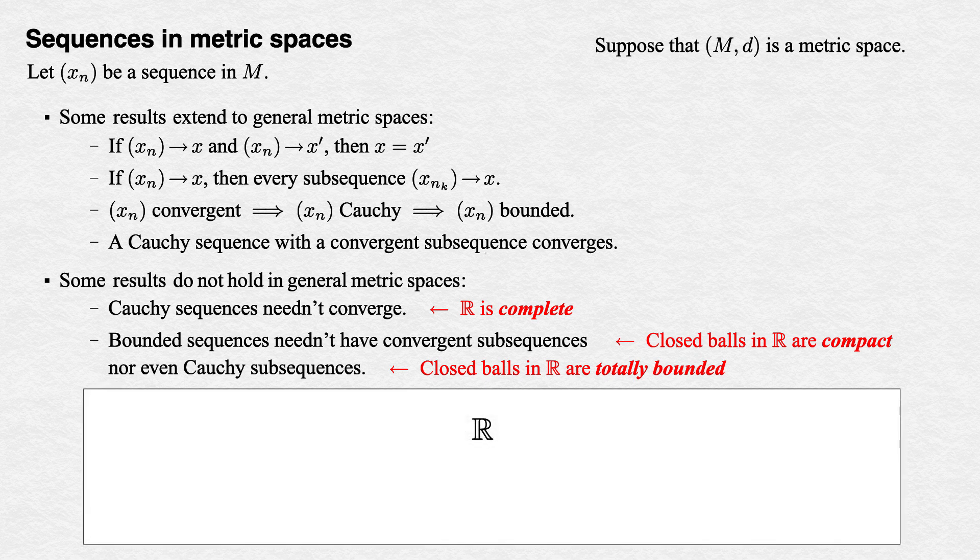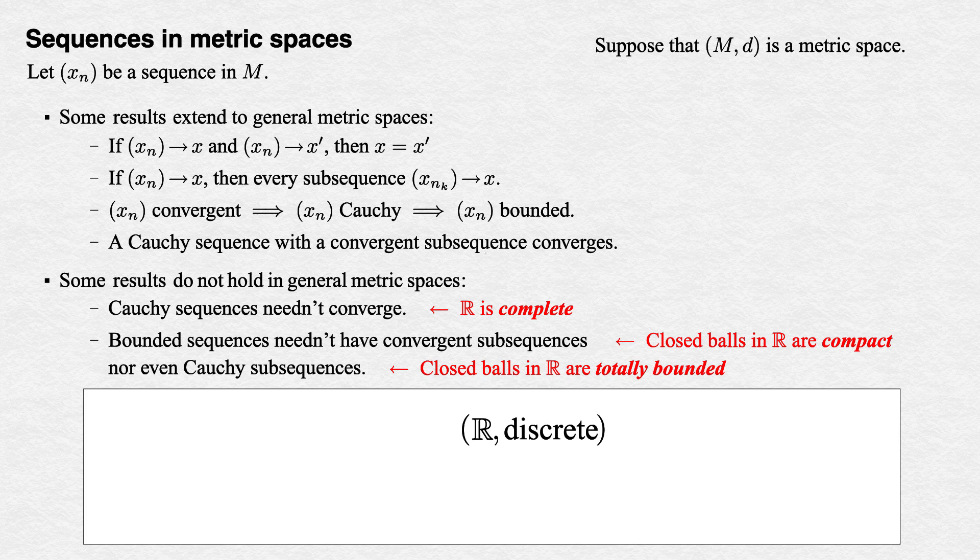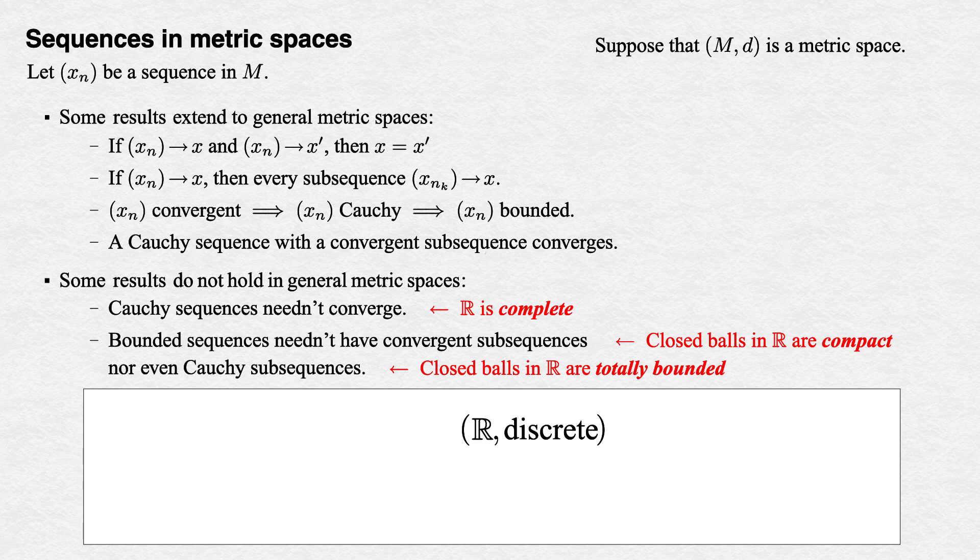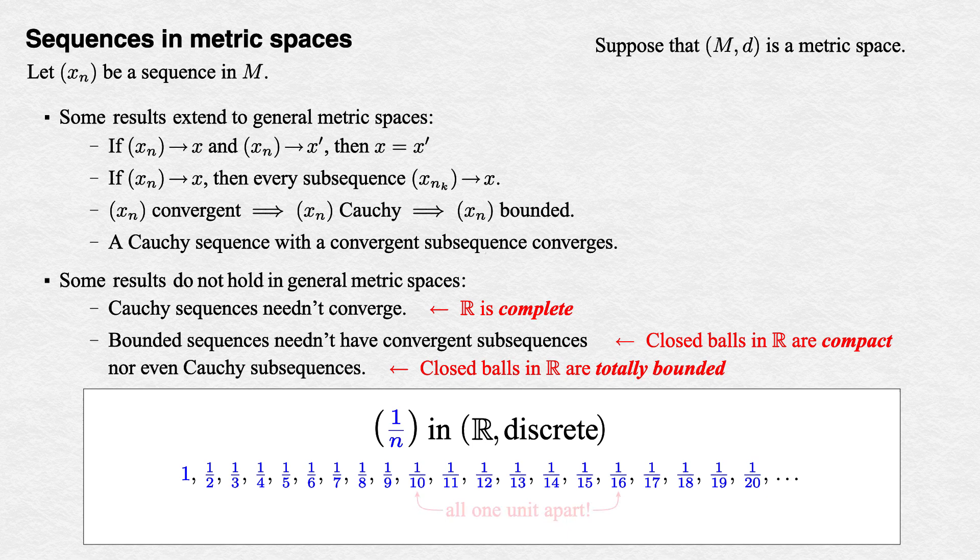Discrete spaces provide ready examples of this phenomenon. We can take the set of real numbers, but assign to that set the discrete metric instead of our usual one, so that all of its points are one unit apart from one another. We're no longer looking at the real line, but a shattered set of individual real numbers.